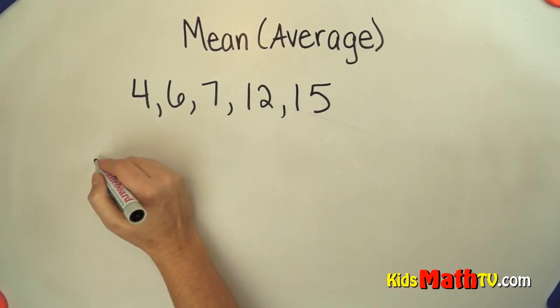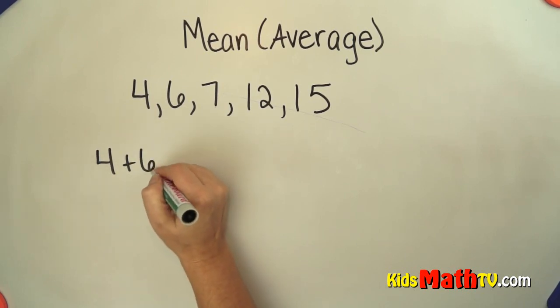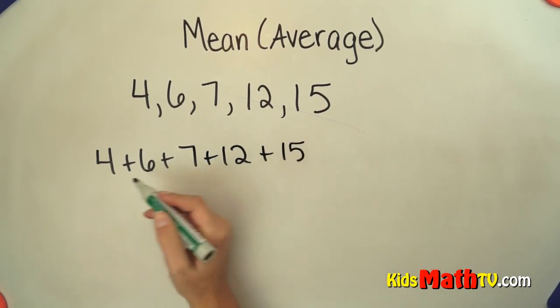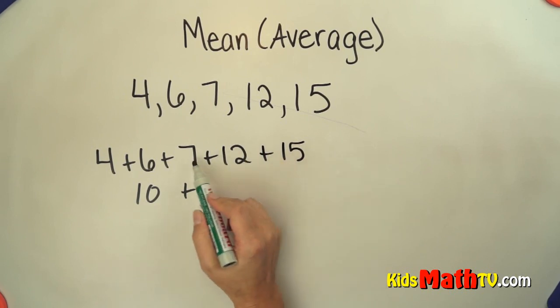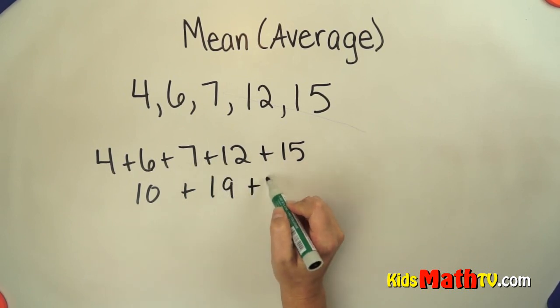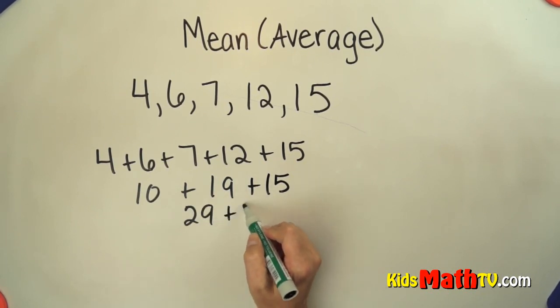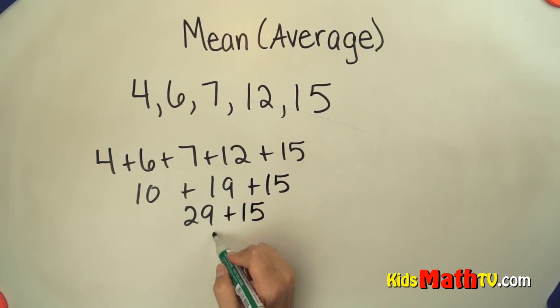So we'll just start with the first part, 4 plus 6 plus 7 plus 12 plus 15. Let's see, I see 10 plus, that's 19, plus 15, so 10 and 19 is 29, added to 15 is 44.